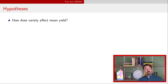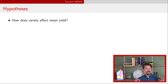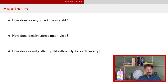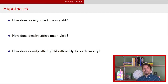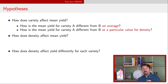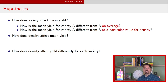Let's think about scientific questions we might have from this experiment — ideally before you actually conduct it. We might ask: How does variety affect mean yield? How does density affect mean yield? Does density affect yield differently for each variety? More specifically, how is the mean yield for variety A different from B averaged over the levels of density, or at a particular value of density?